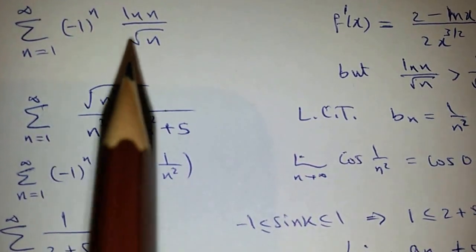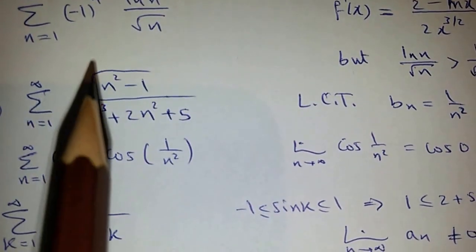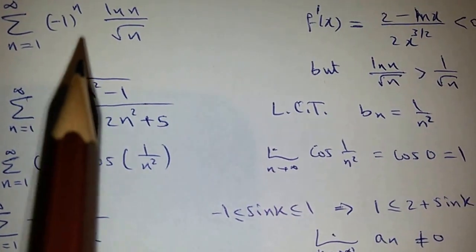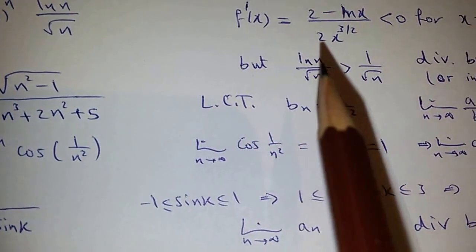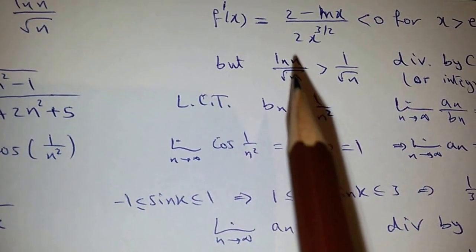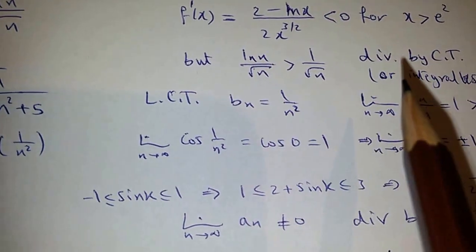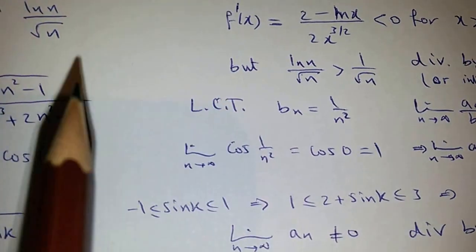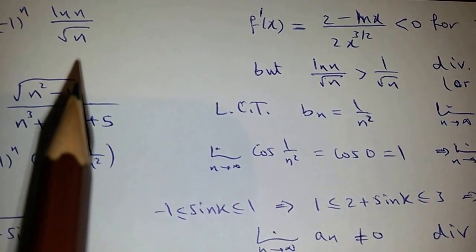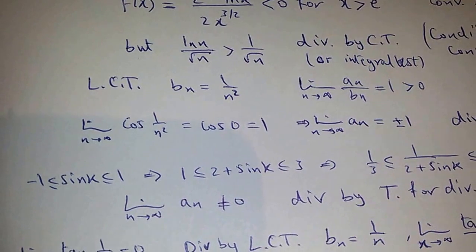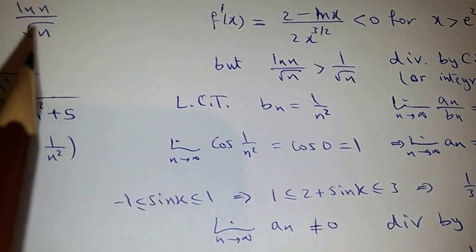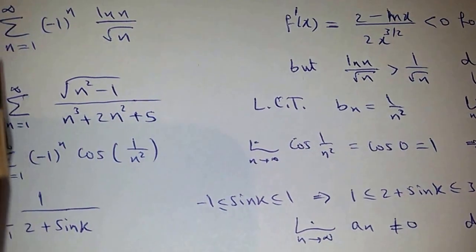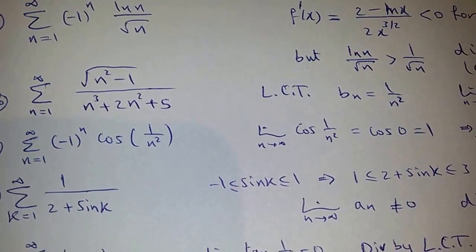But you can also prove that this series, using the alternating series test, is convergent. The derivative of ln(X) over square root of X is less than 0 when X is greater than e². So it is decreasing, and the limit — you can prove it is 0 using L'Hôpital's rule. So this series is conditionally convergent.